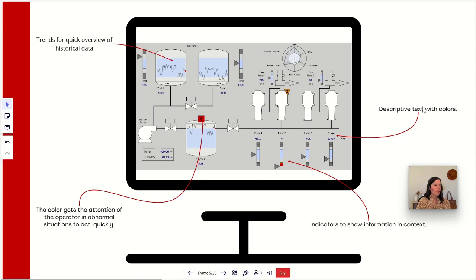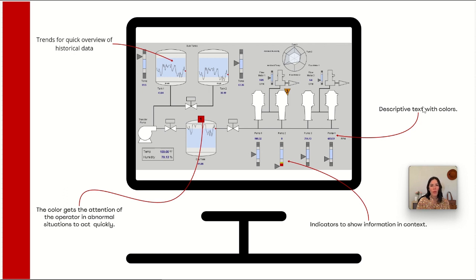We also have descriptive text with colors. This is important because some people on the plant floor can be colorblind, and for them it is too difficult to understand and associate colors with the right alarms in the system. So we have also added descriptive text on the screen, which is also important when environmental issues can cause the screen not to look the way we want.